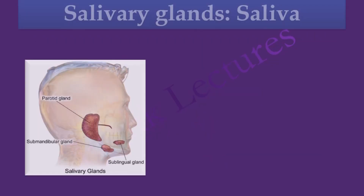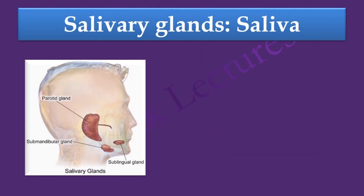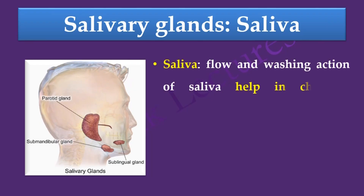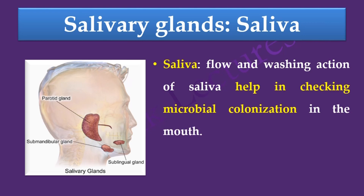Saliva is produced by salivary glands and contains antimicrobial substances such as lysozyme. The flow and washing action of saliva also helps check microbial colonization in the mouth. The pH of saliva is between 6.44 and 6.85, which is inhibitory to microbial growth.